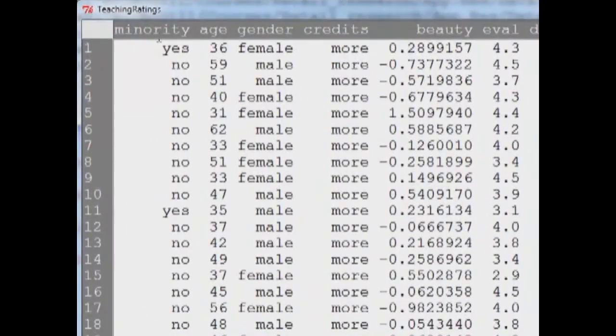If the academic or the instructor is a minority person, yes or no, it's a factor variable. The age of the instructor is in years: 36, 59, 51, and so on and so forth.